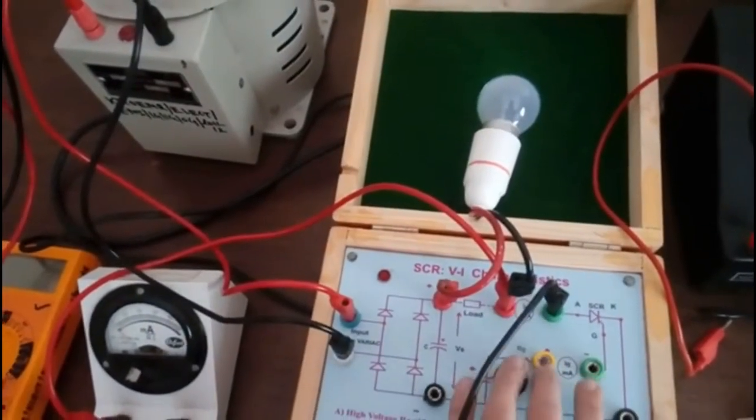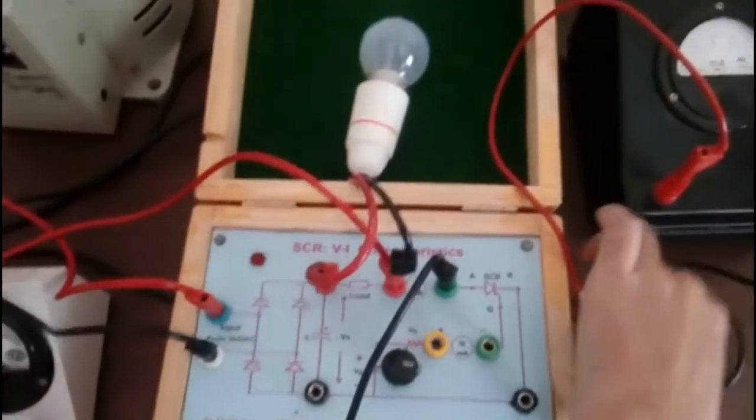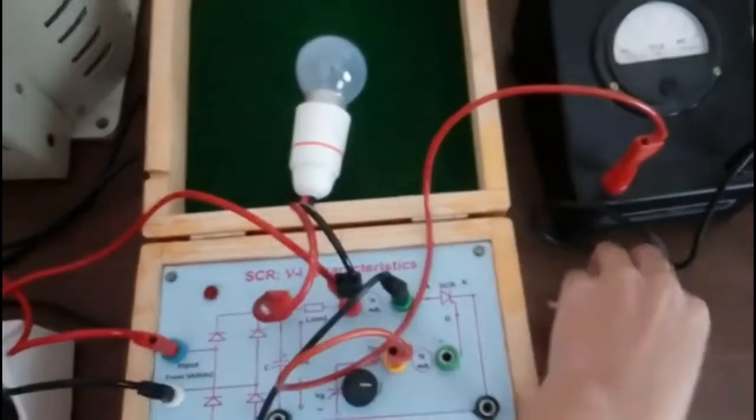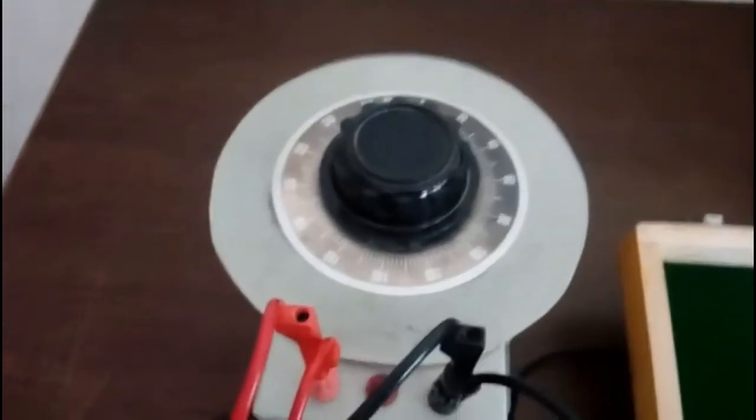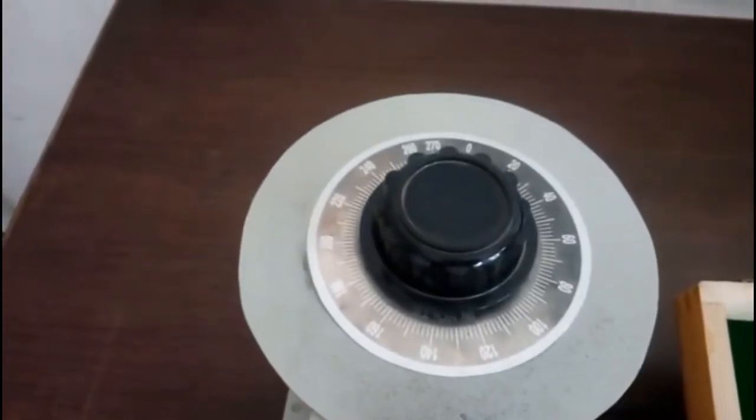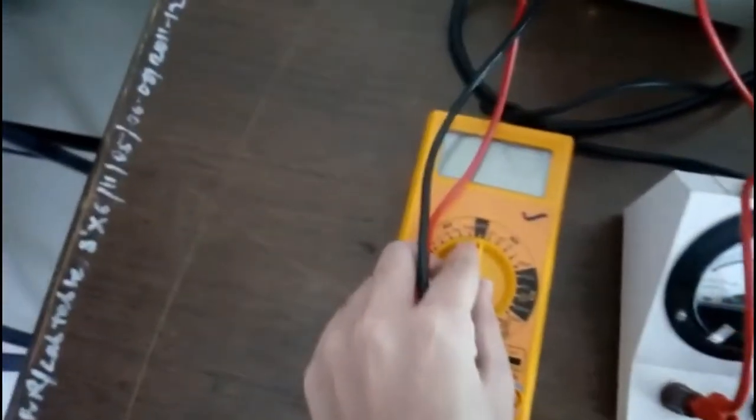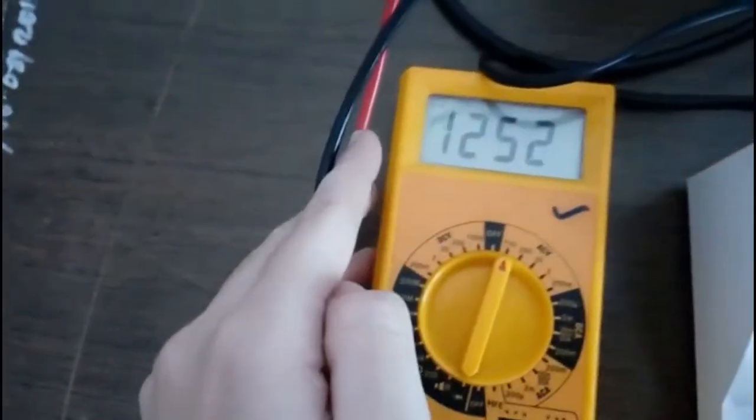To the gate terminal of the SCR I will connect one more ammeter to measure the gate current. Look at the rating, it is 0 to 5 milliamp. And this is a single phase variac, 0 to 270 volt. This is my DMM, the digital multimeter. I shall set it to AC voltage.